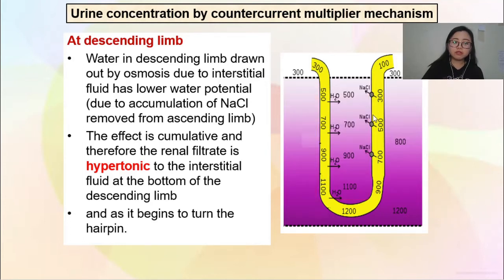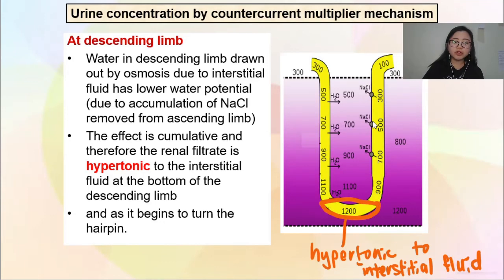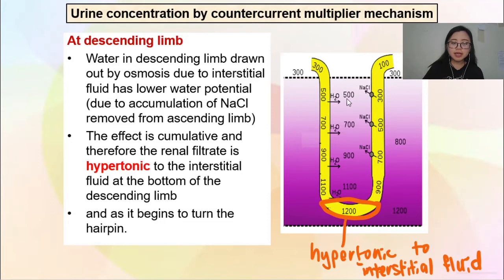Semakin filtrate itu turun, semakin banyak air yang dia akan hilang — the effect is cumulative and continuous. Di atas dia hilang sikit, sampai tengah hilang sikit lagi, di bawah hilang lagi banyak air. So semakin dia turun, dia semakin pekat. Bila dia sampai di bawah loop of Henle where it begins to turn the hairpin, it will be hypertonic to the interstitial fluid.